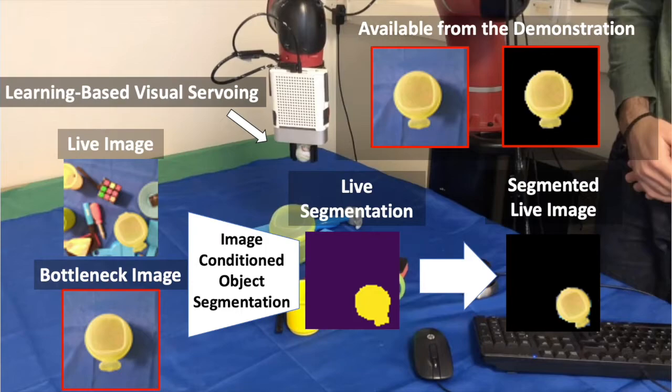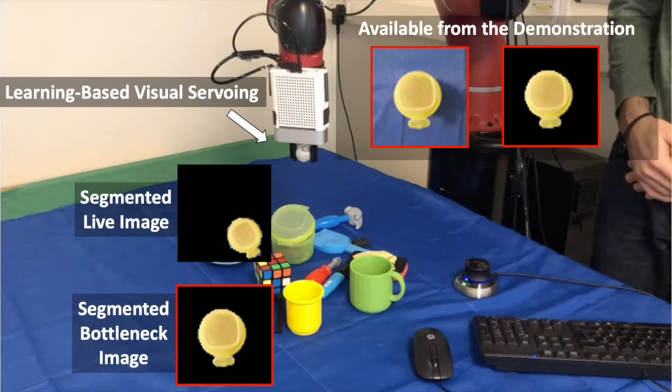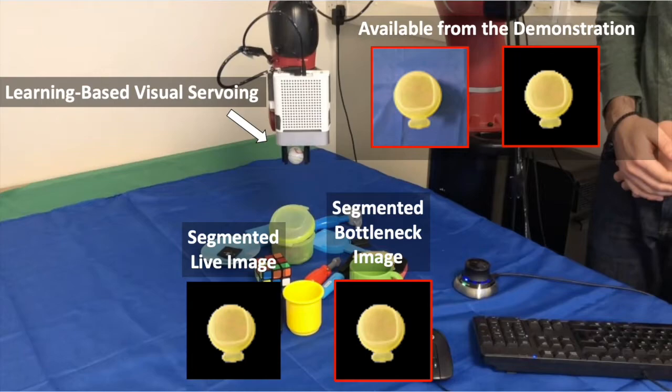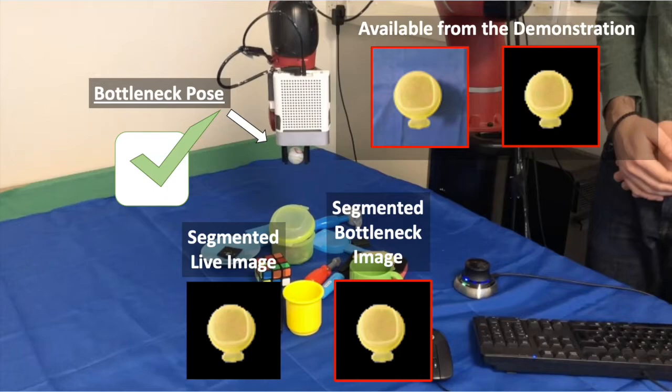Second, it uses the segmented live and segmented bottleneck images to obtain a velocity command through a learned visual servoing network. This will move the live image towards the bottleneck image, and the process will be repeated until the bottleneck and live images are completely aligned. At that point, we have reached the bottleneck pose.